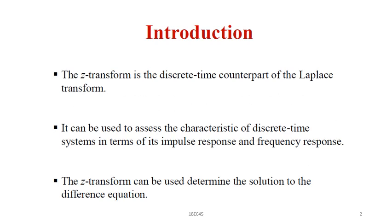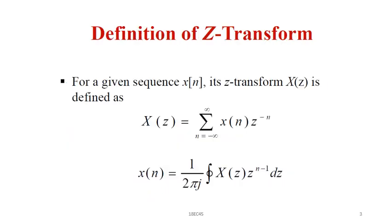Z-transform is the discrete time counterpart of Laplace transform. It can be used to assess the characteristics of a discrete time system in terms of its impulse response and frequency response. Z-transform can also be used to determine the solution to the difference equation. The definition of Z-transform: if X(N) is my signal, its Z-transform X(Z) is equal to summation over N from minus infinity to plus infinity of X(N) into Z to the power minus N.